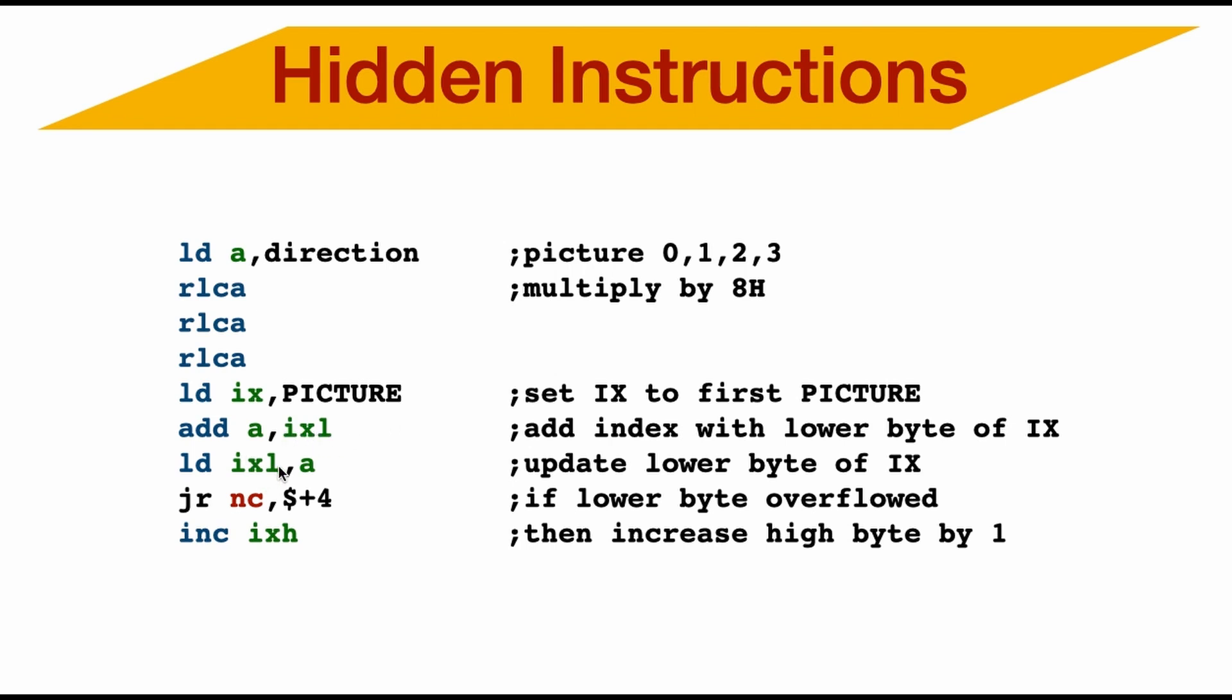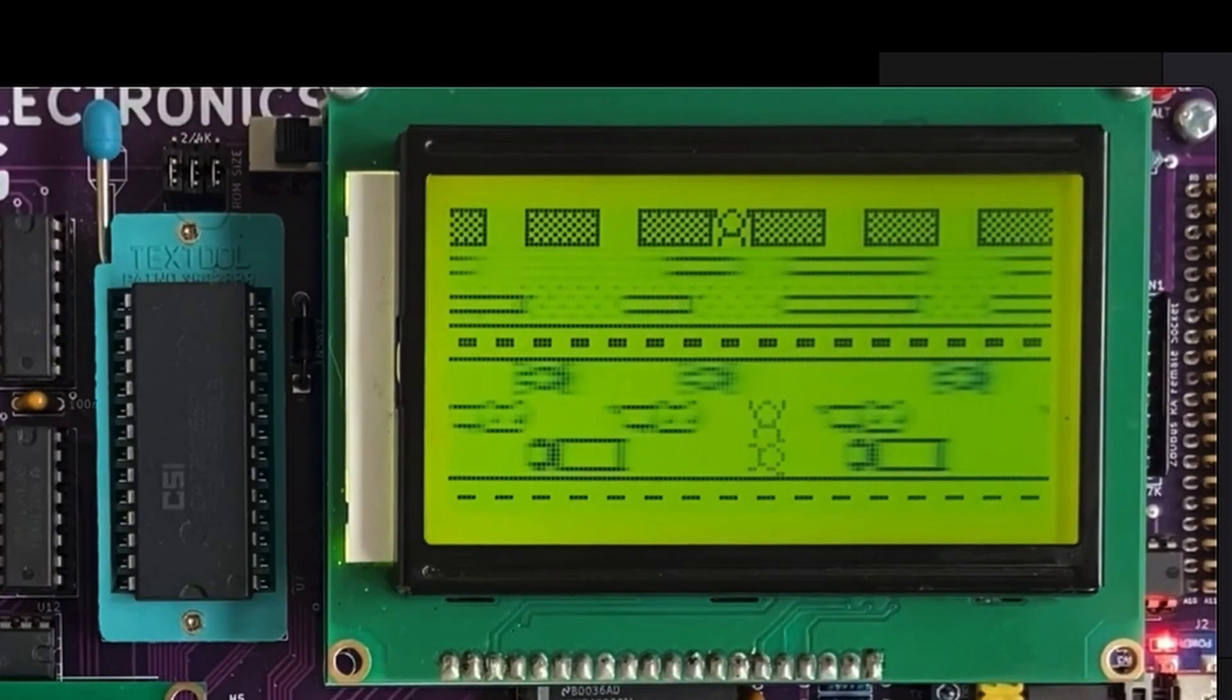And then I update the lower byte of IX with the new corrected index. And if there's a carry based on this ad here, I would also update the higher byte of IX. Now I have the correct index. And here's our little frog moving around the screen.